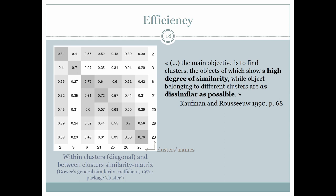Gower's general coefficient of similarity is computed here with all 36 technical descriptors, not only the three used in the partition. Despite the variety below the cut, clusters stay quite well defined according to the description of Kaufmann and Rousseeuw.